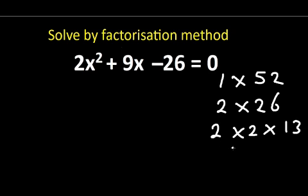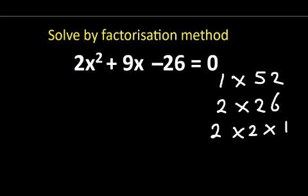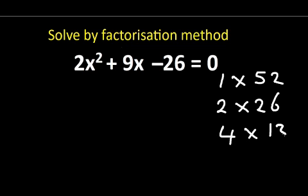We also have 4 times 13, since 52 divided by 4 gives us 13. So these are the possible factors of 52. Now let's add up or subtract these factor pairs to see which one gives us 9.